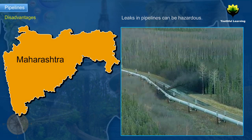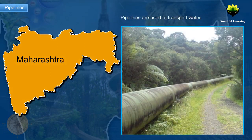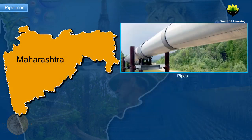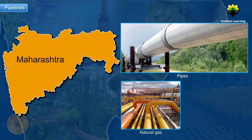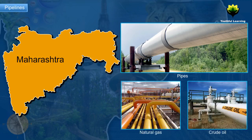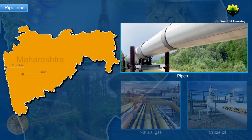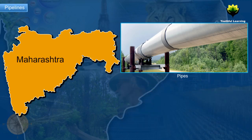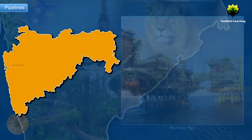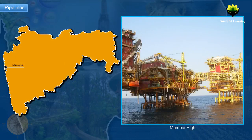In the state, pipelines are used to transport water. Pipes are also used to supply natural gas and crude oil in the cities of Mumbai and Pune. Pipelines are also used to transport crude oil from Mumbai High to refineries in Uran.